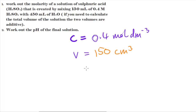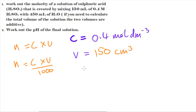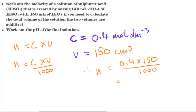The equation I'm going to use converts concentration and volume into moles, taking into account that the volume is in cm³. Number of moles equals concentration times volume divided by 1000. So the number of moles equals 0.4 times 150 divided by 1000, which gives 0.06.